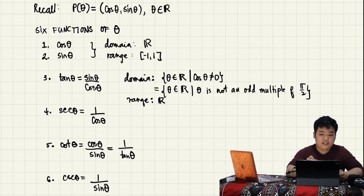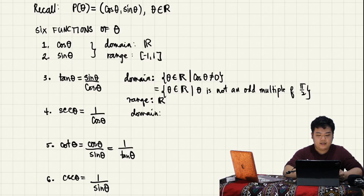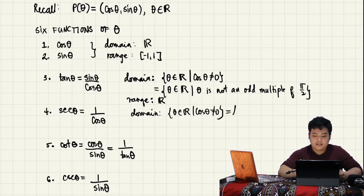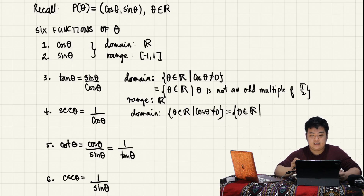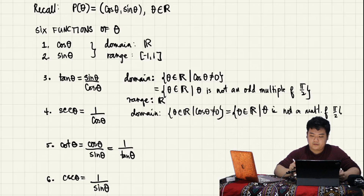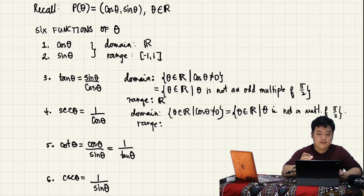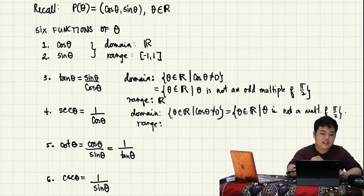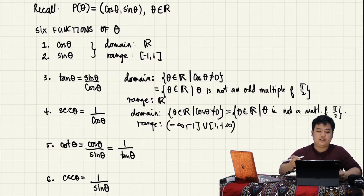Secant theta has the same domain as tangent: the set of theta in R such that cosine theta is not zero, which means theta must not be an odd multiple of pi over 2. As for the range, looking at the range of cosine and taking reciprocals, secant ranges over negative infinity to negative 1 union 1 to positive infinity.